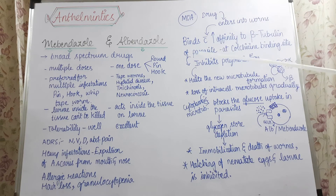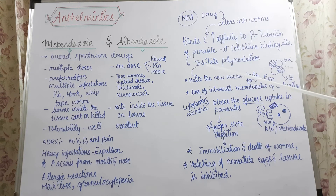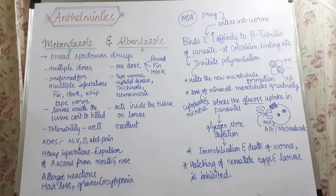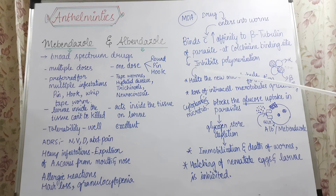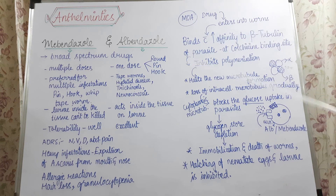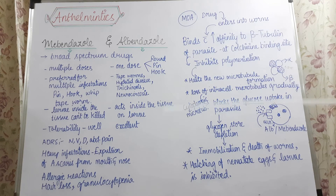After absorption, albendazole enters the blood circulation and undergoes first-pass effect, giving a metabolite called the sulfoxide metabolite. This sulfoxide metabolite of albendazole also shows anthelmintic activity and can cross the blood-brain barrier. The advantage of albendazole is that it is lipophilic, so it crosses the blood-brain barrier, enters the brain, and shows activity inside the brain. Its half-life is approximately 8.5 hours.